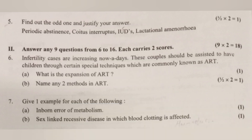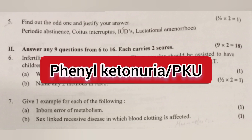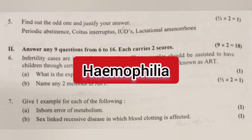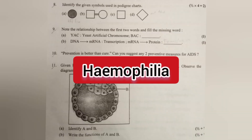Question 7: Give one example for each of the following. A. Inborn error of metabolism — Answer: Phenylketonuria (PKU). B. Sex-linked recessive disease in which blood clotting is affected — Answer: Hemophilia.